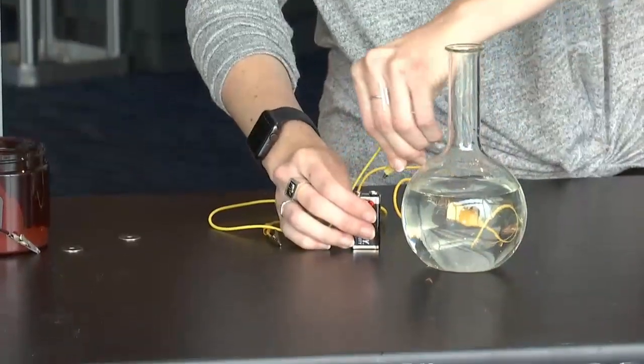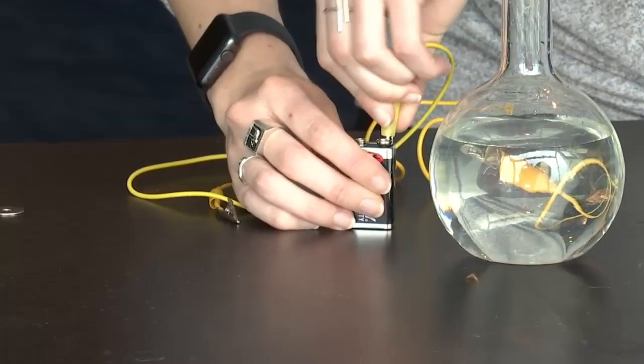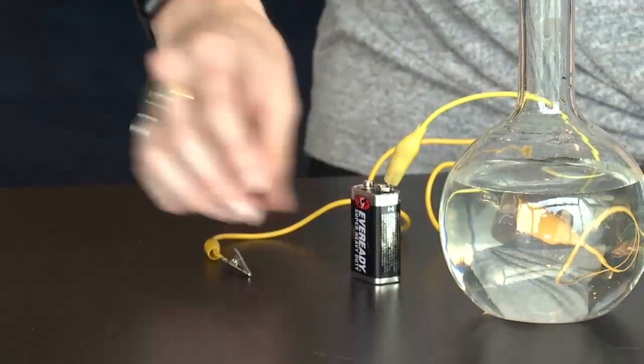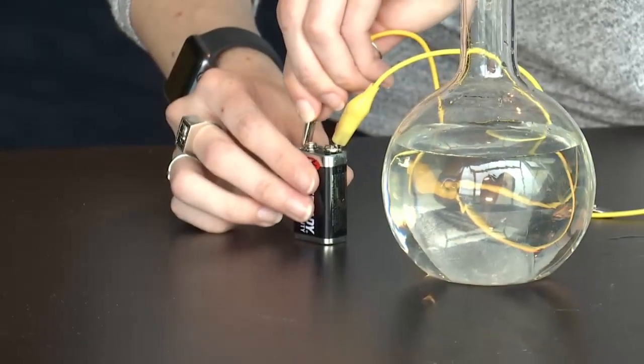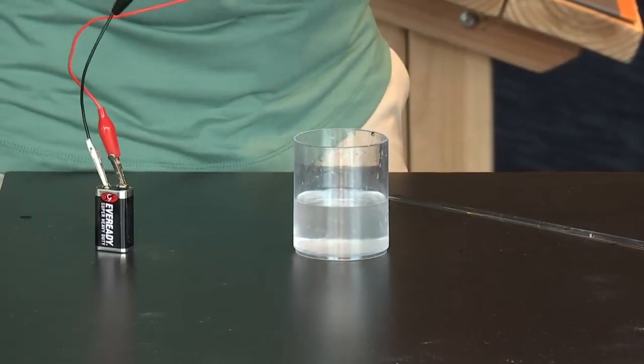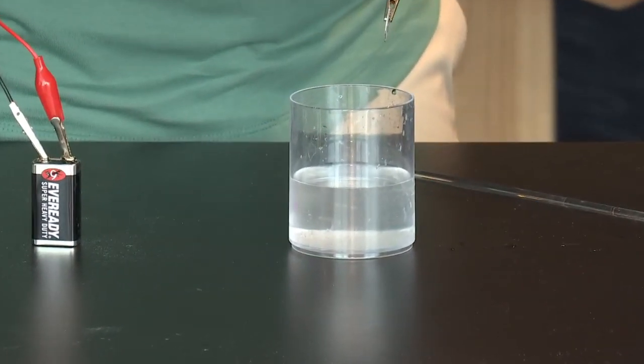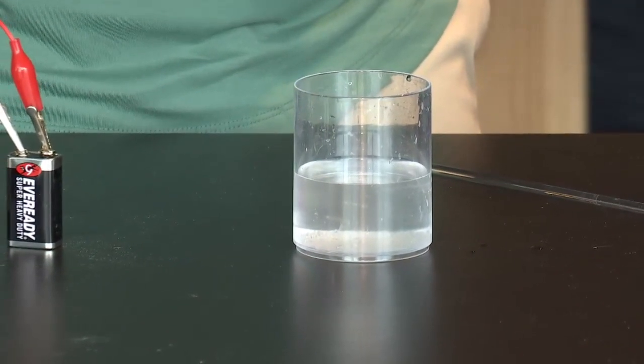So I'm going to hook one lead and one washer up to one side of the battery. And the other one is going to go to the other side of the battery. And then we're just going to drop those washers into our water and Epsom salt. The trick here is making sure those washers don't touch each other.